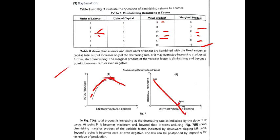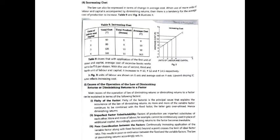Marginal product is first positive, then becomes zero at a certain point, and then becomes negative. Diminishing return to a factor is also called increasing cost.